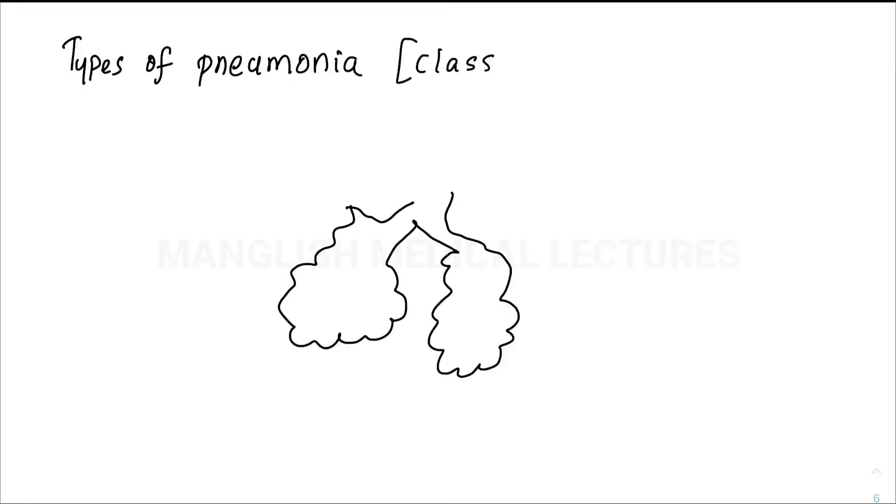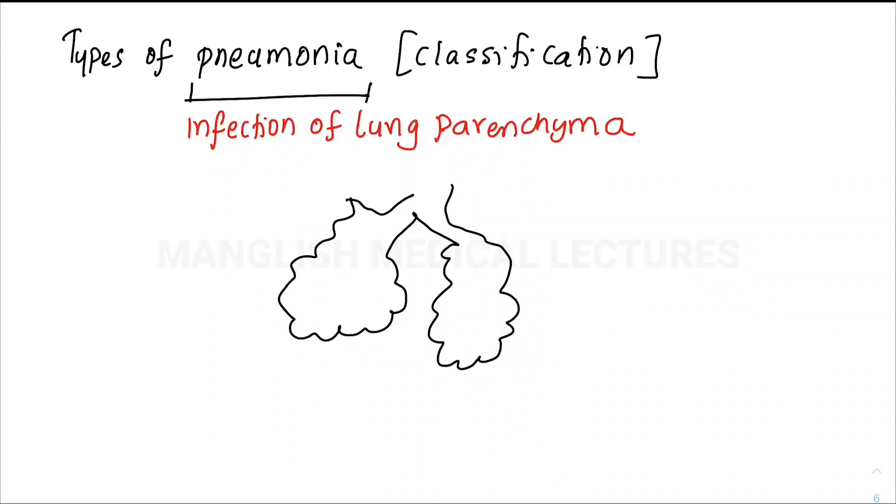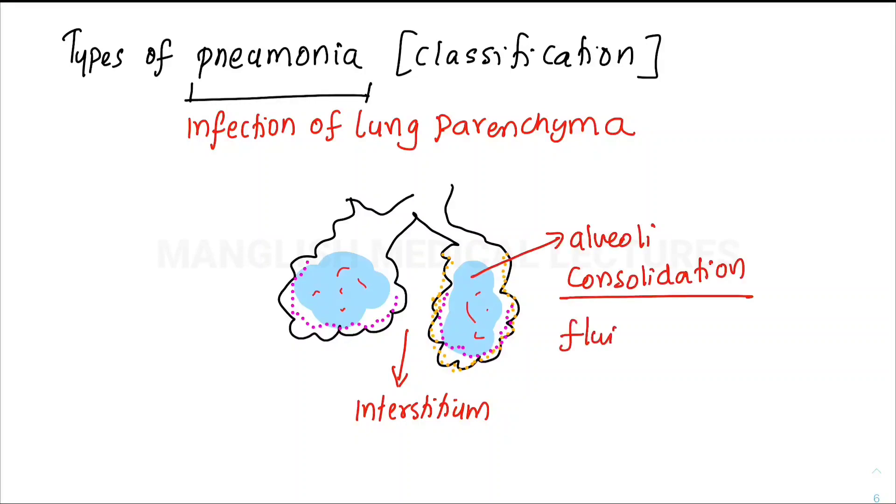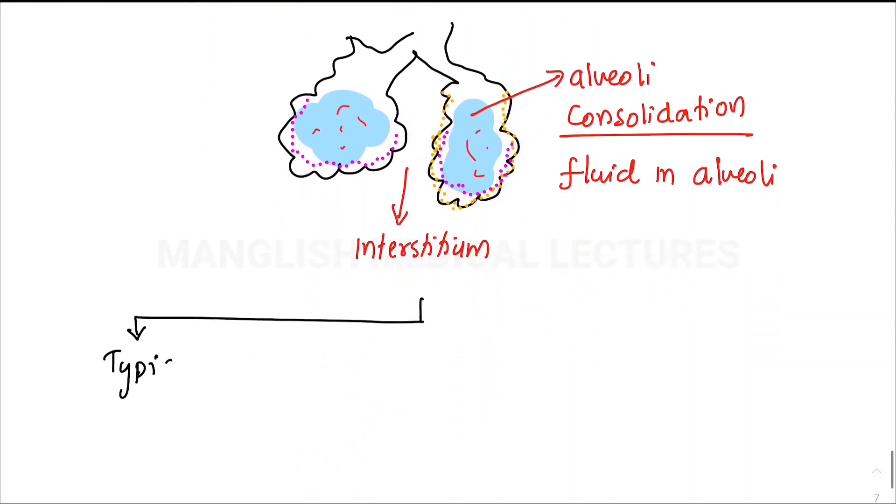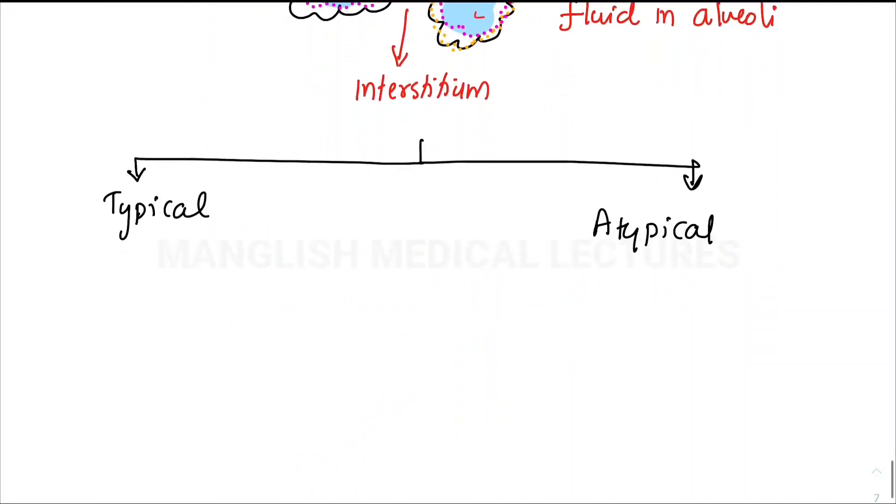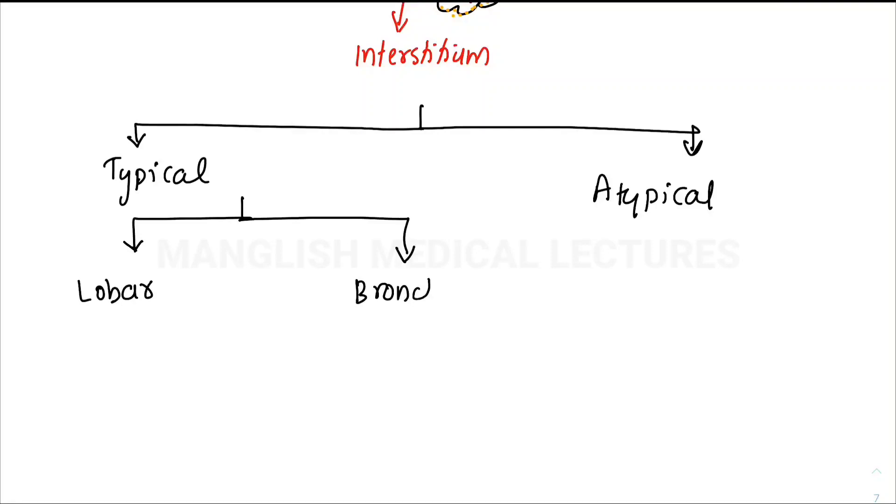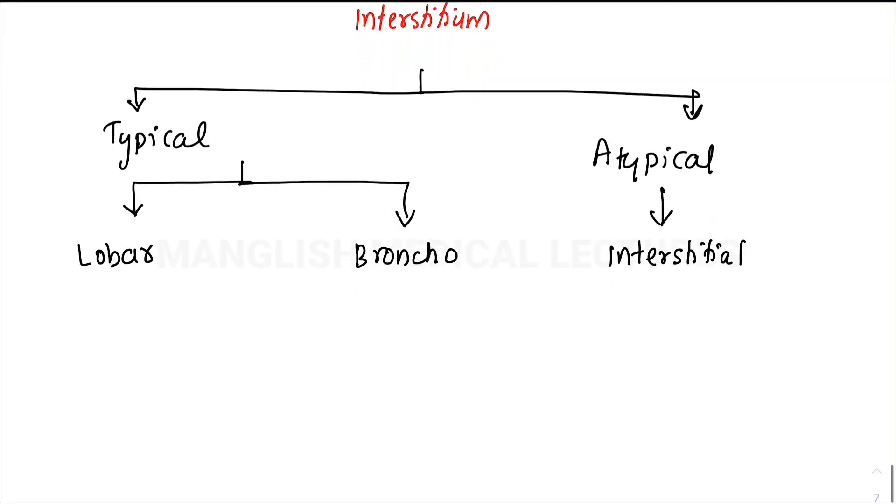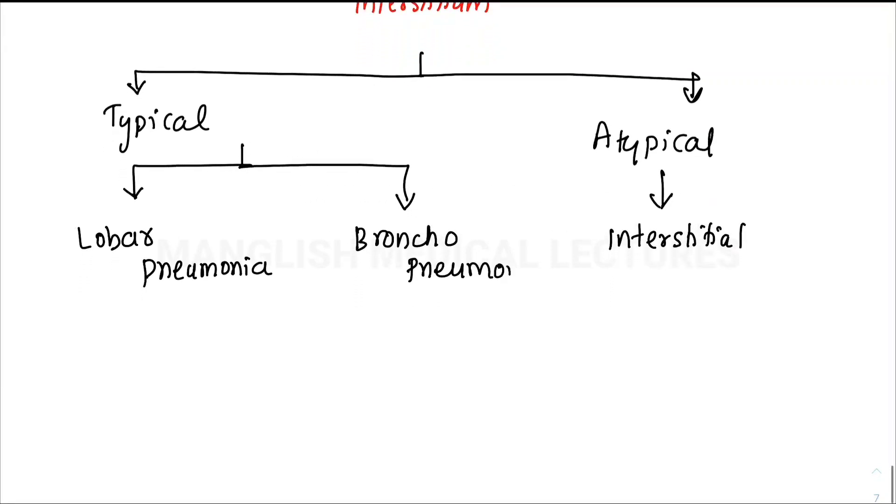Now we'll talk about types of pneumonia. Pneumonia is infection of the lung parenchyma. Inflammation or infection can be in the interstitium sparing the alveolar cavity, or in the alveolar cavity causing consolidation. Consolidation means air is getting replaced by fluid. Classification includes typical pneumonia—lobar pneumonia and bronchopneumonia—and atypical, which is interstitial pneumonia.